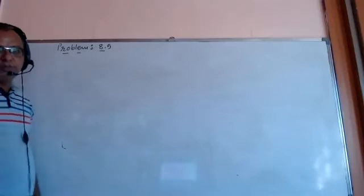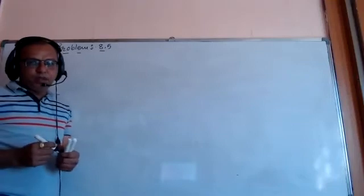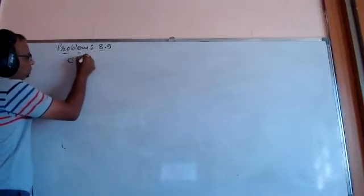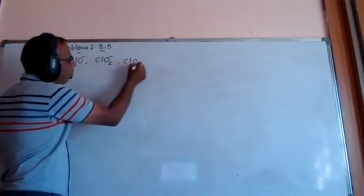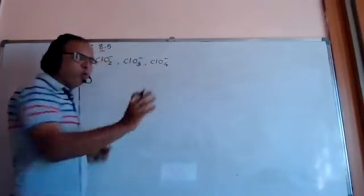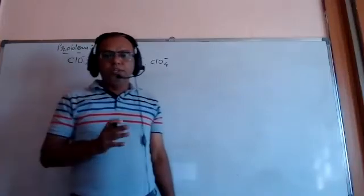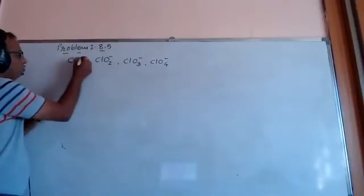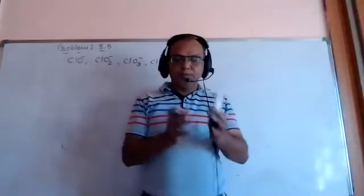Problem number 8.5 is about the disproportionation reaction. The question asks which of the following — ClO⁻, ClO₂⁻, ClO₃⁻, and ClO₄⁻ — will not undergo disproportionation reaction, and also we have to explain why it is not possible. Disproportionation reaction is a reaction in which both oxidation and reduction take place with the same element.